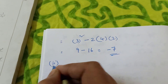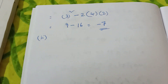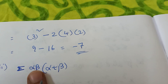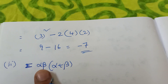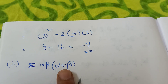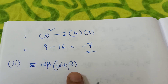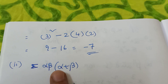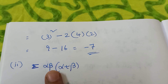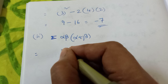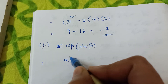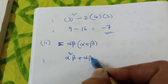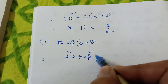Now second part. See next: Σ of αβ(α+β). How to find this? First, multiply them — α²β plus αβ², right? So Σαβ(α+β) expands to: Alpha²·Beta plus Alpha·Beta² for one term.